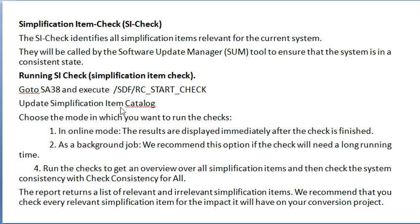Update the simplification item catalog. We can run in two modes: in online mode, it displays the results immediately after the check is finished. As a background job — if it takes long running time, we can choose to run it as a background job.